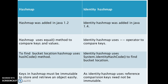To find the bucket location for retrieving or adding an object, HashMap uses the hashCode() method. But IdentityHashMap uses System.identityHashCode() to find the bucket location.